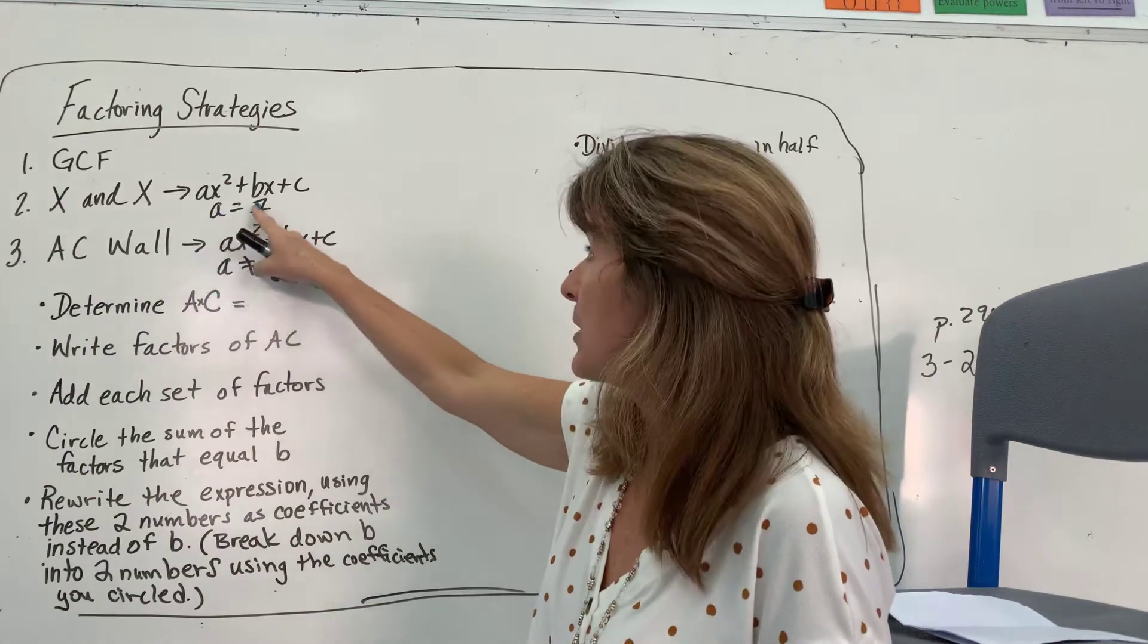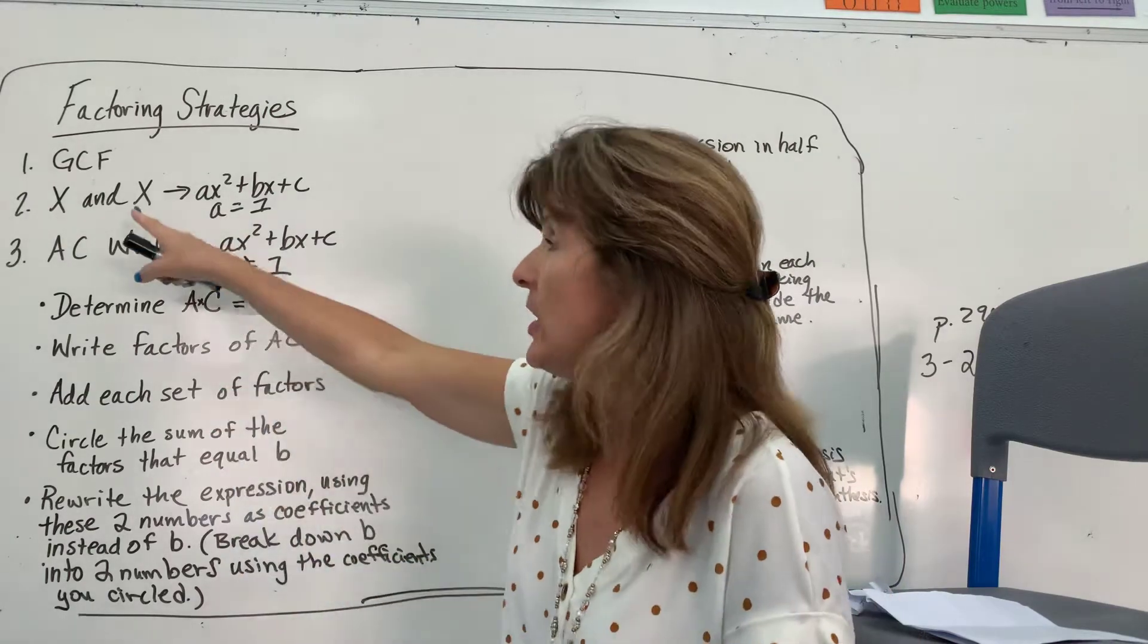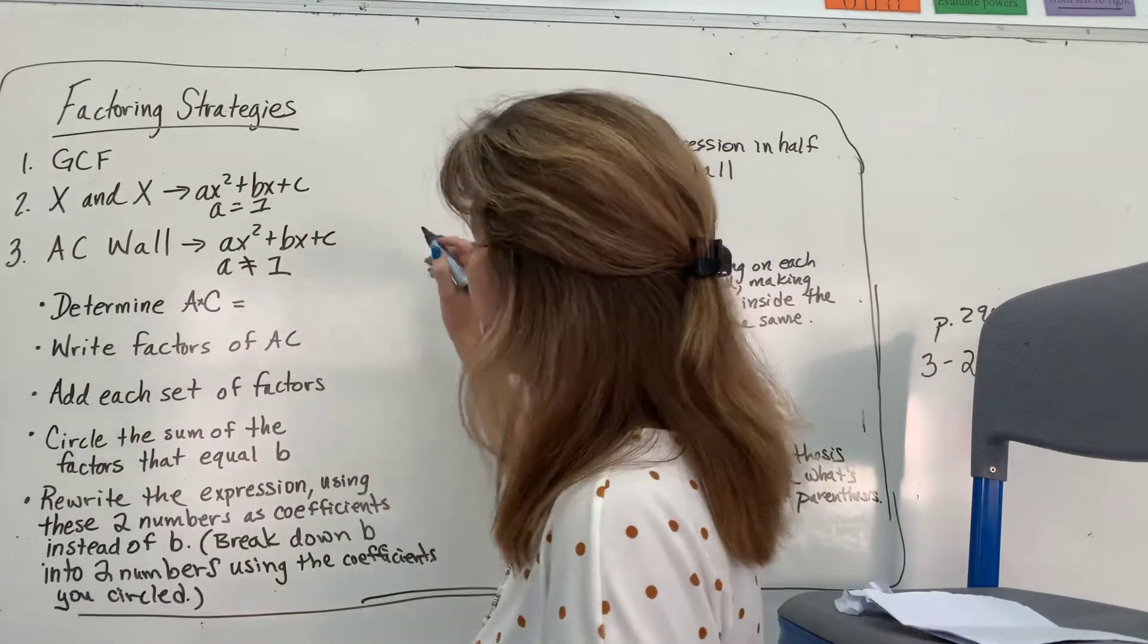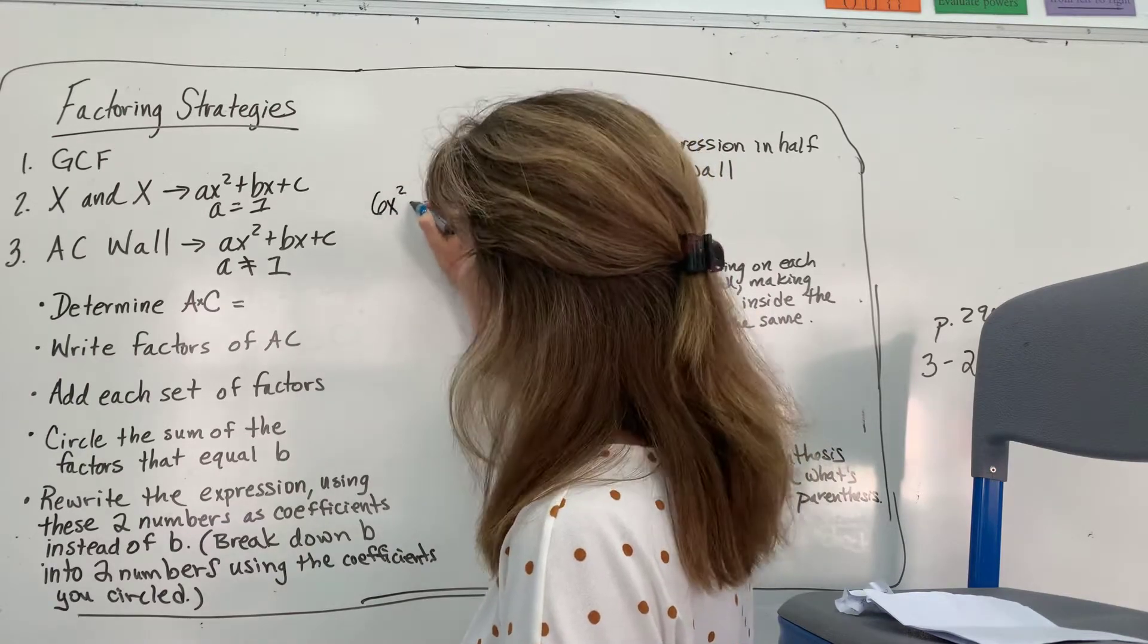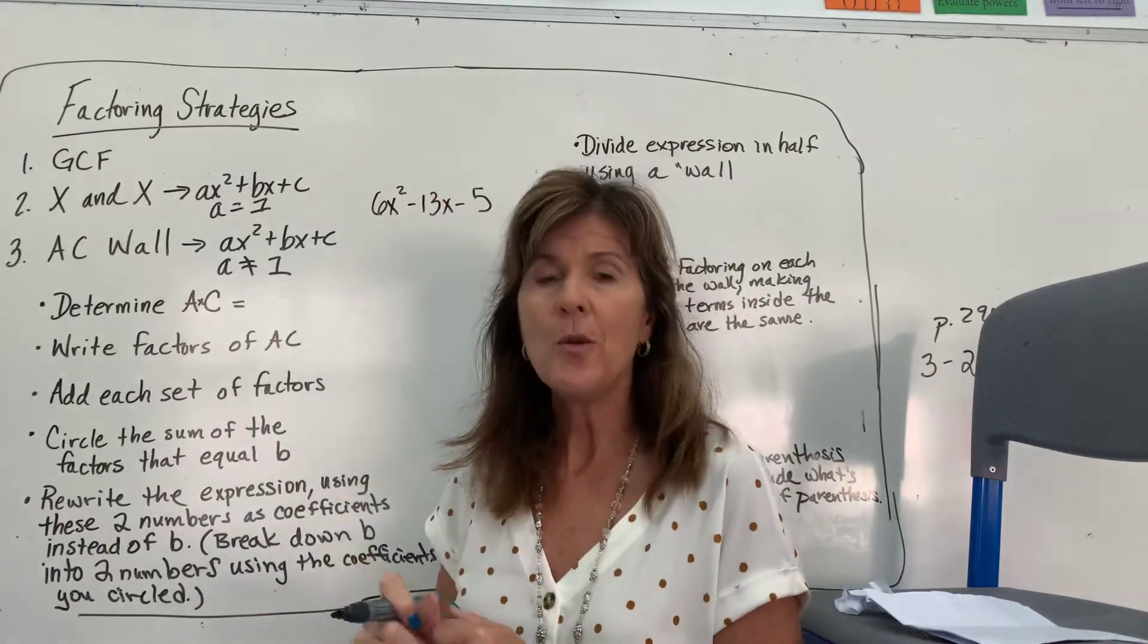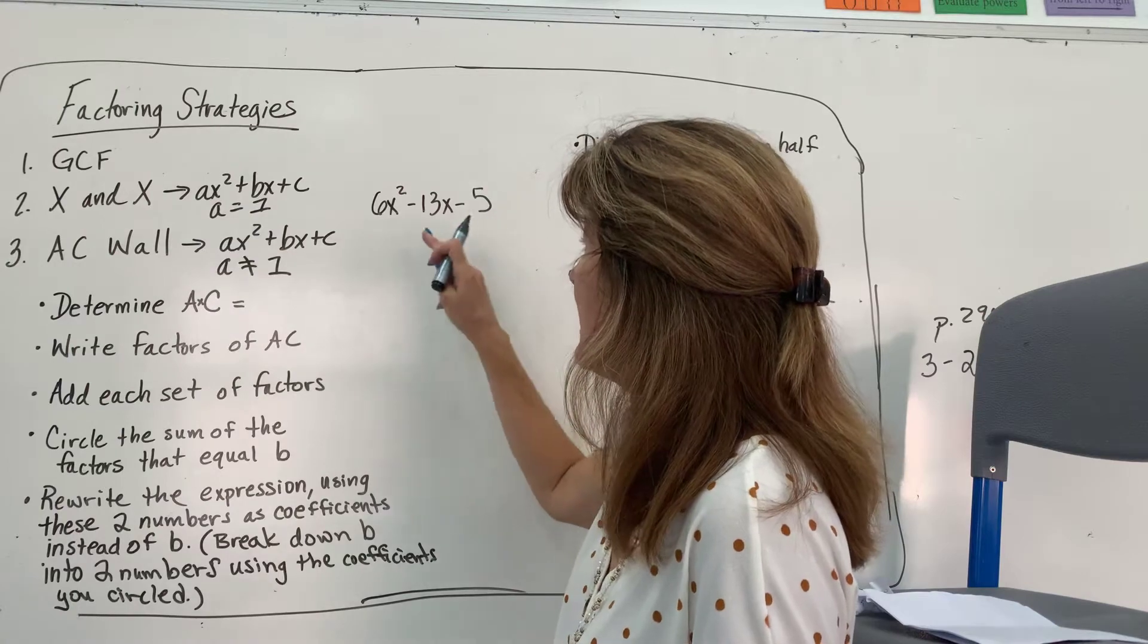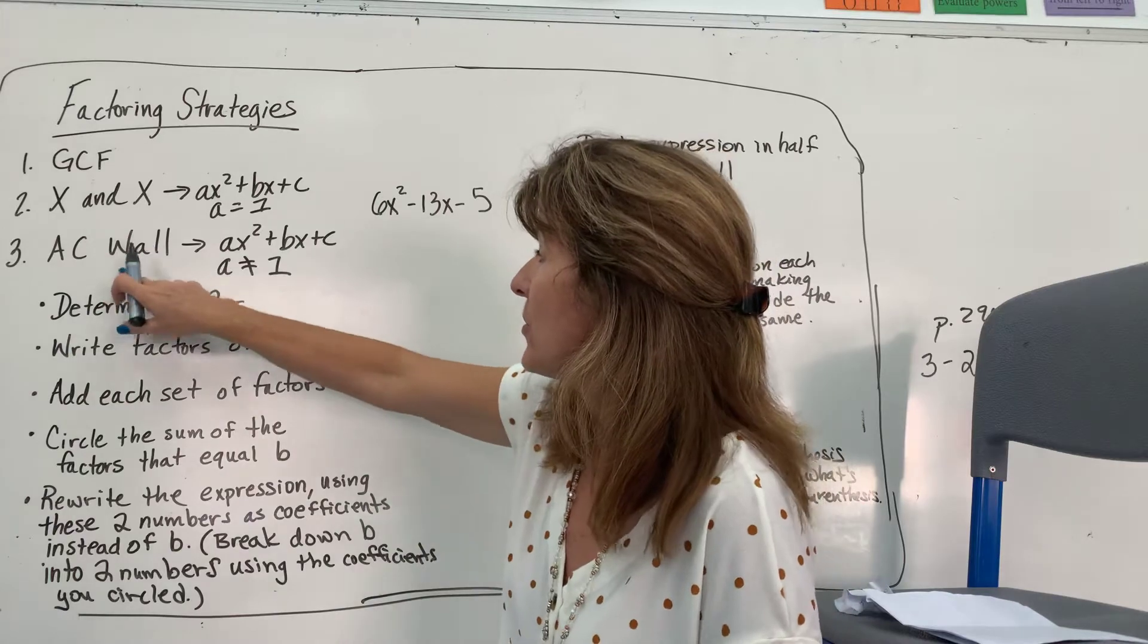If it's written in the form AX squared plus BX plus C, and A equals 1, the leading coefficient is 1, you're going to use X and X. But if it's not 1, you're going to use AC Wall. So, let me give you an example of one that is not: 6X squared minus 13X minus 5. If you had to factor that, GCF, there's no GCF. Between these two, A is 6. A is not 1. So, we're going to have to do AC Wall.